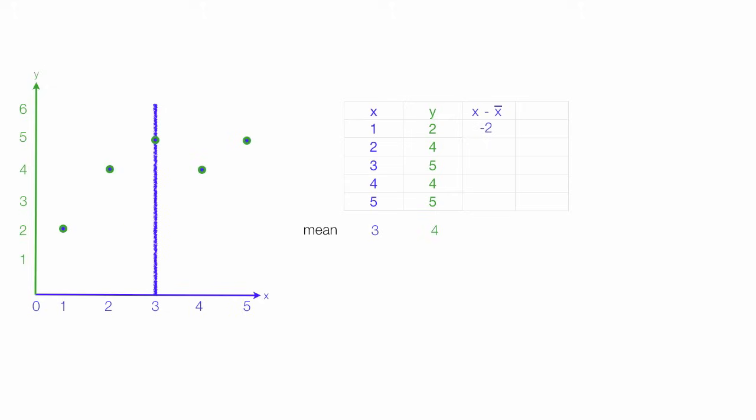The next point is 2 minus 3, the mean of 3, which is negative 1. The next observation happens to be right on the mean. So it's 3 minus 3, which is 0. Now I have 4 minus 3, which is 1. And finally, 5 minus 3, which is 2.